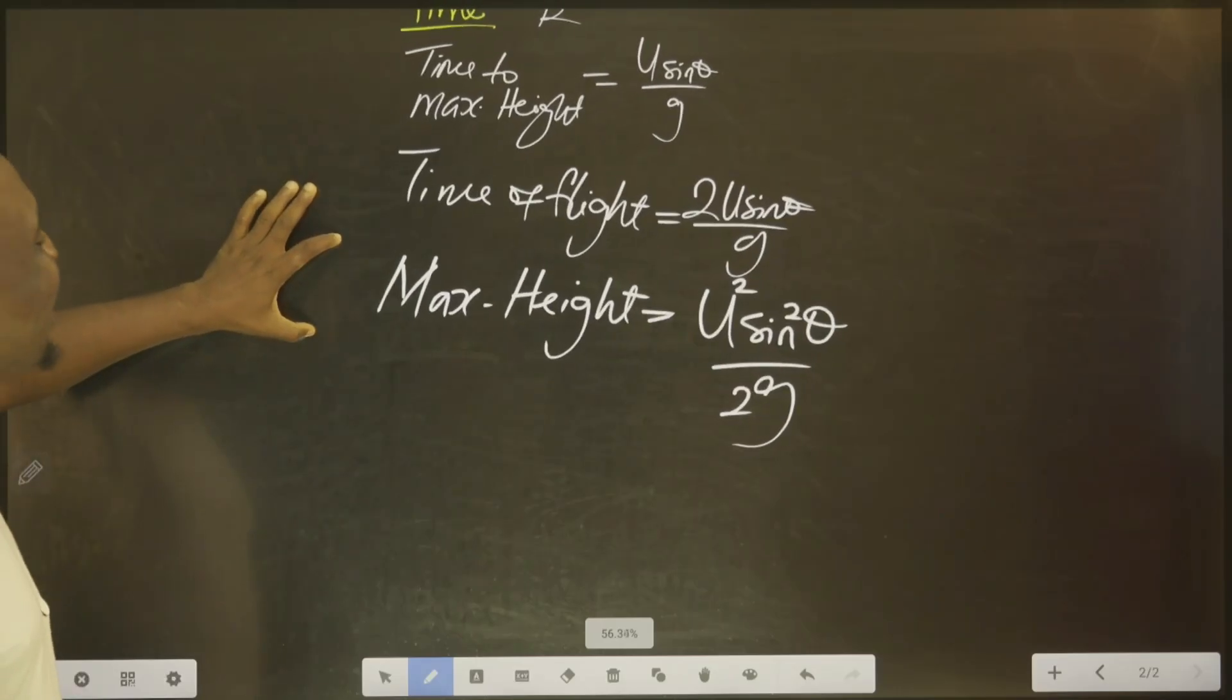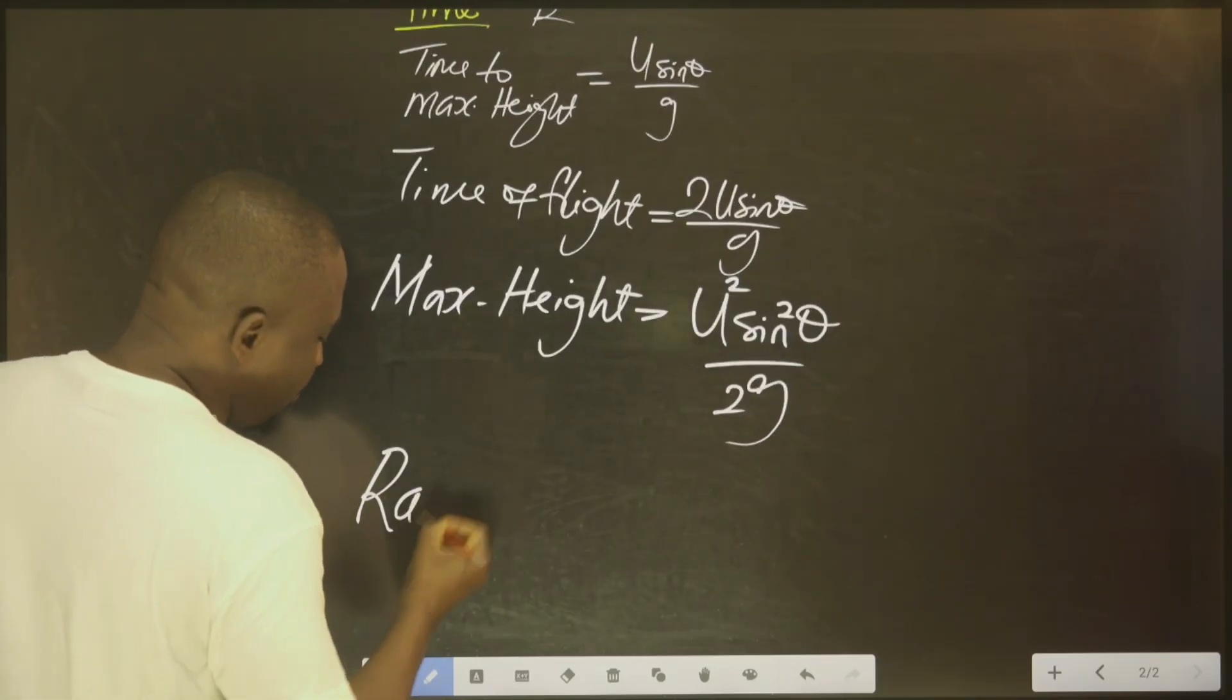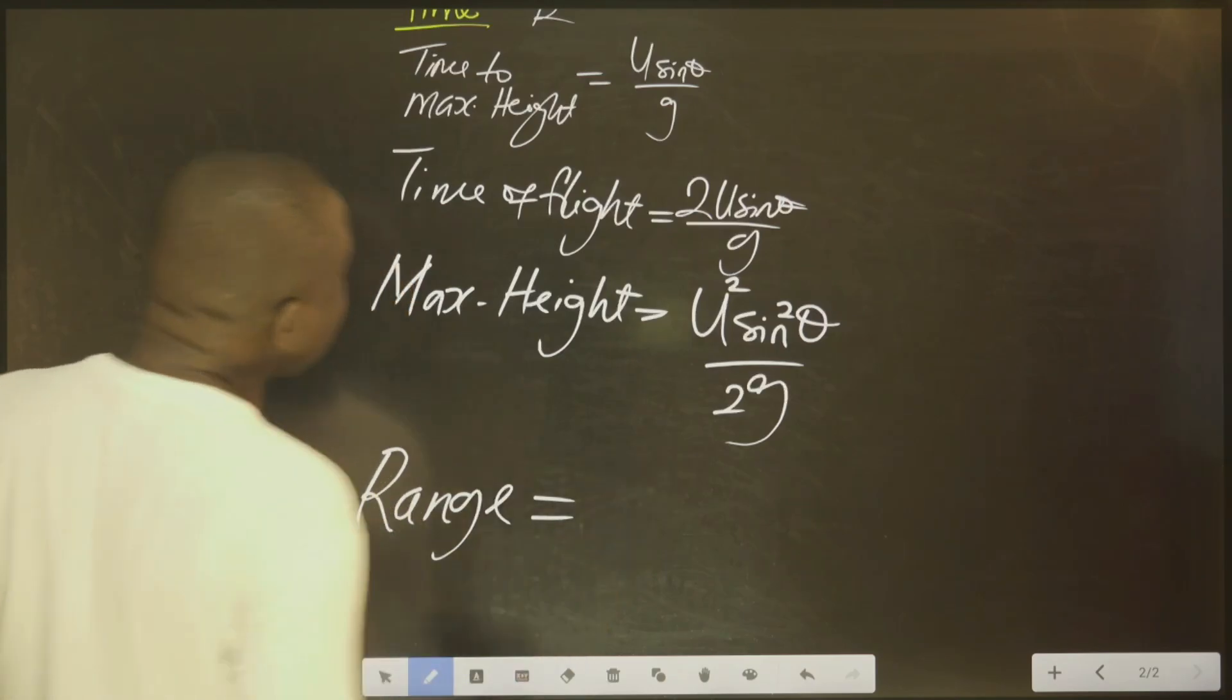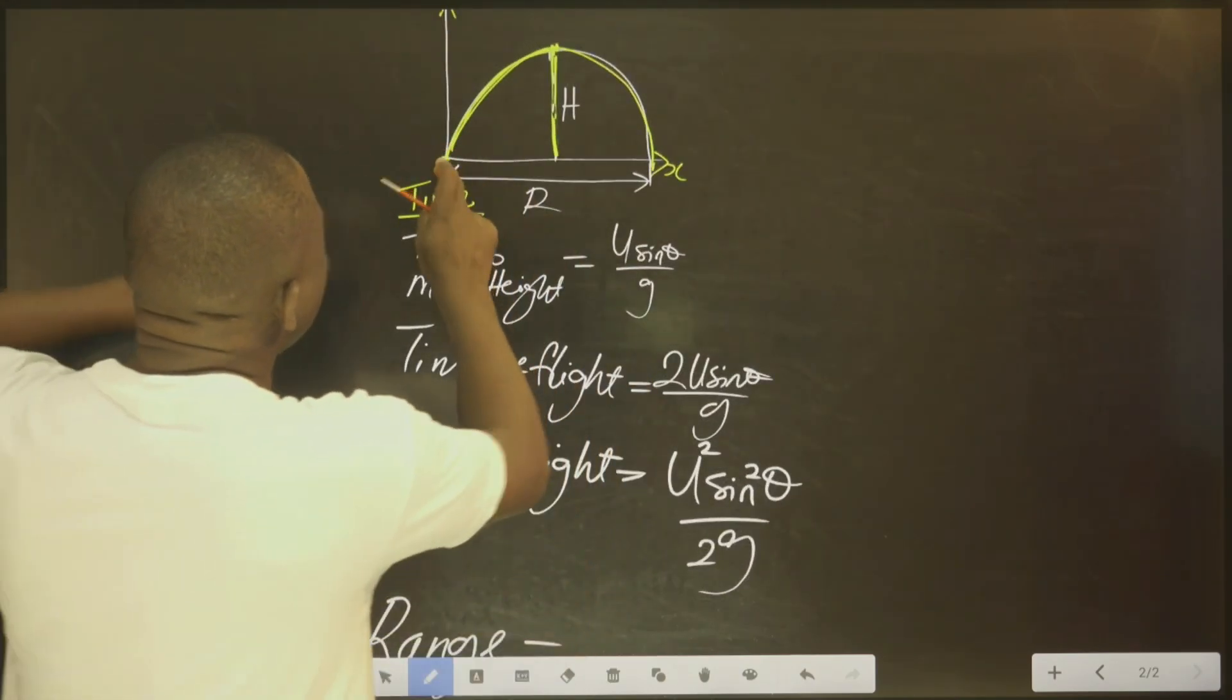The next one is the range. Range is the distance between this and this.